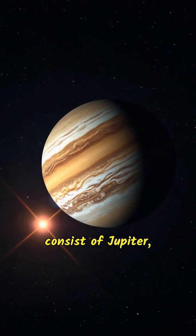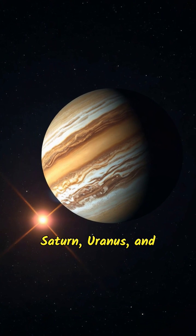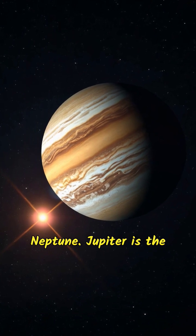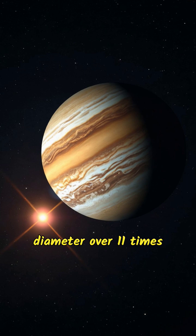The outer planets consist of Jupiter, Saturn, Uranus and Neptune. Jupiter is the largest planet, with a diameter over 11 times larger than Earth, and known for its many moons and great red spot, a giant storm persisting for centuries.